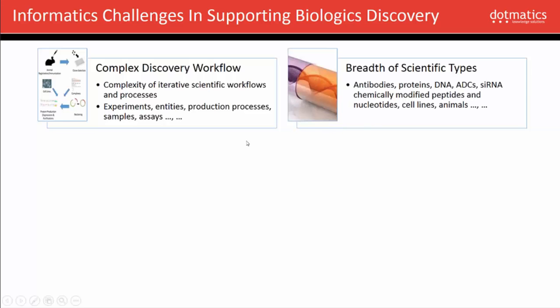The second challenge is with the actual entities being produced as therapeutics and used within those processes, because there is a very wide breadth of scientific data types — pure sequence-based entities such as antibodies and proteins, chemically mixed biologics such as conjugates, chemically modified peptides and nucleotides, and then structureless entities such as cell lines and animals. All in all, a very broad set of scientific data types the software needs to handle.